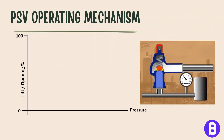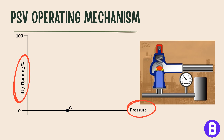API 520 shows a curve reflecting the opening mechanism of a pressure safety valve by plotting the valve lift versus the pressure exerted on it. At first, as system pressure reaches the PSV set pressure, the valve begins to open.